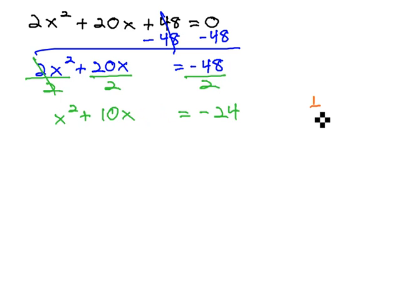Again, the way we do that is we take 1 half times b, or the number in the middle, 10, and we square that result. Half of 10 is 5, and 5 squared is 25.